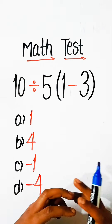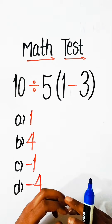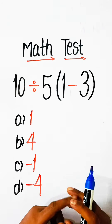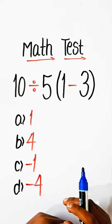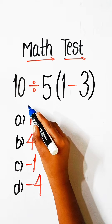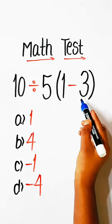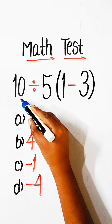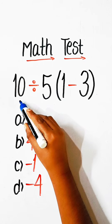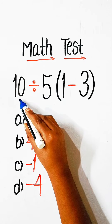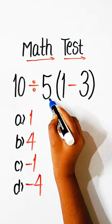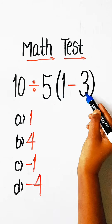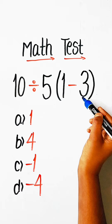Hello everyone, welcome back to my YouTube channel. In this video, we will try to solve this math equation. Let's start: 10 divided by 5, under bracket 1 minus 3, equals to what?